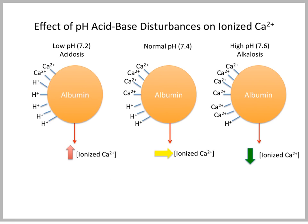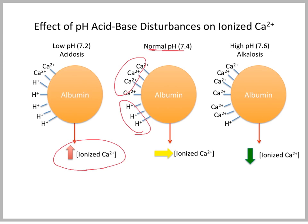Acid-base disturbances can impact the ionized calcium because albumin, if you look at the center of the slide, is negatively charged. Calcium and hydrogen ions can both bind to these negative charges on albumin. At normal pH, we have a distribution that leads to roughly 45% ionized calcium. However, in a situation where we have more hydrogen ions — acidosis — this can knock calcium off albumin and increase the ionized calcium. So in a clinical setting, it's most important to measure ionized calcium.